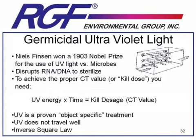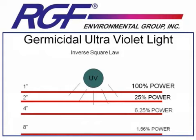UV light is a proven object-specific treatment, but does not travel distance as well. All light is affected by the inverse square law — this includes traditional UV systems, the sun, and fluorescent lamps. The inverse square law simply states that as you double the distance from a light source, any particular point will receive only a quarter of that light source's power. So if we look at our chart, if we're able to achieve the CT value and sterilize a microbe in one second at one inch, at two inches it's going to take four seconds, at four inches 16 seconds, and at eight inches 64 seconds to sterilize that same microbe.